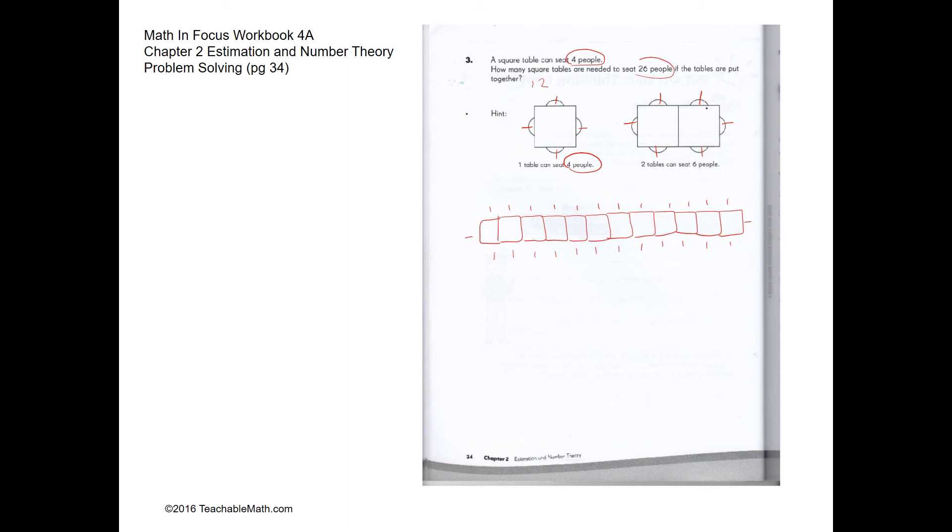If we want to sit 26 people, how many tables should we have? In this case, we are going to have 1, 2, 3, 4, 5, 6, 7, 8, 9, 10, 11, 12 tables. Let's check how many people we can sit. We have 12 on the top, 12 at the bottom, that's 24, and 25, and 26. So we need 12 tables to seat 26 people.